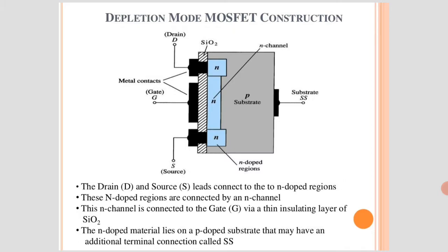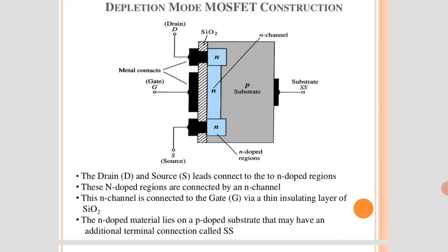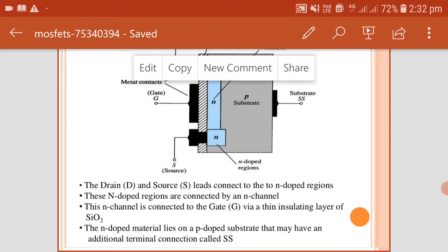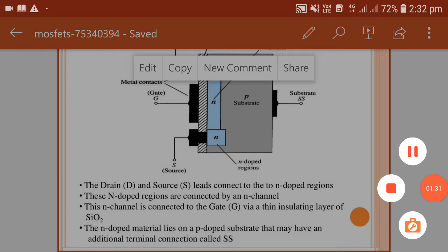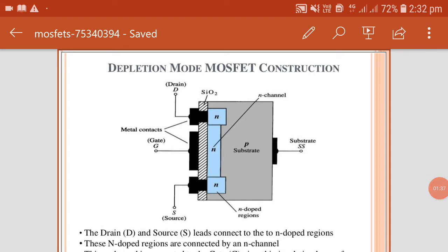There are three terminals in MOSFET: drain (D), gate (G), and source (S), along with N-doped regions, P-doped regions, substrate, and metal contacts. The drain and source leads connect to the N-doped regions. These N-doped regions are connected by an N-channel, which is connected to the gate via a deep insulating layer of SiO2. The N-doped material lies on a P-doped substrate that may have an additional terminal connection called SS. This is the depletion mode MOSFET construction.